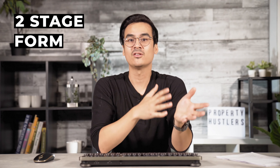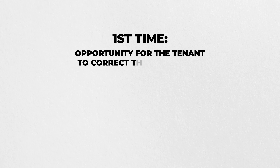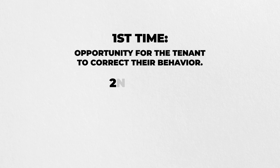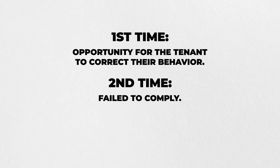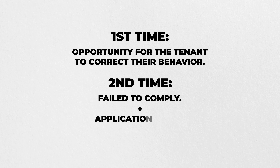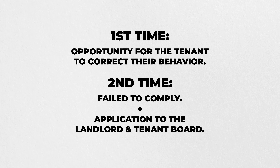It's important to understand that the N5 is a two-stage form, which means you have to effectively serve it twice to the tenant, allowing them a correction period. The first time you serve an N5 is for the tenant to correct the issue, and the second time is because they have failed to comply — at which point you serve them that form in conjunction with your application to the landlord and tenant board.